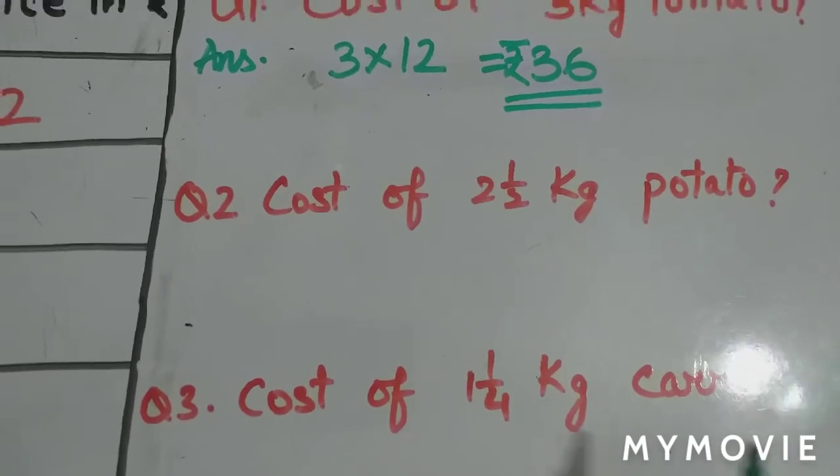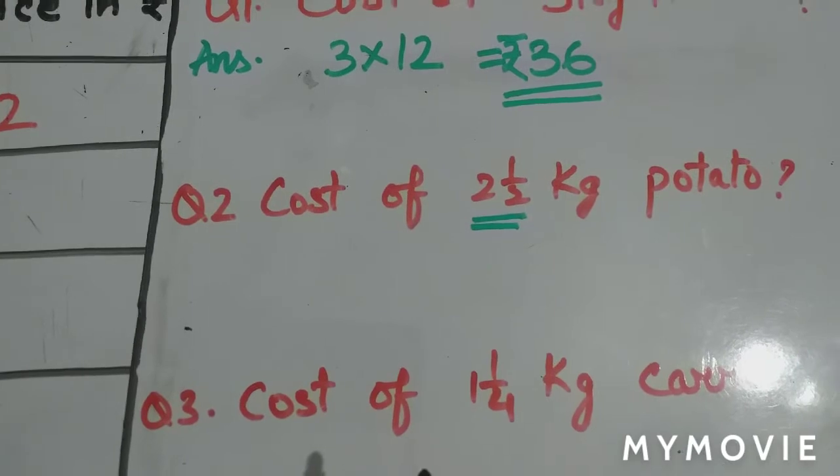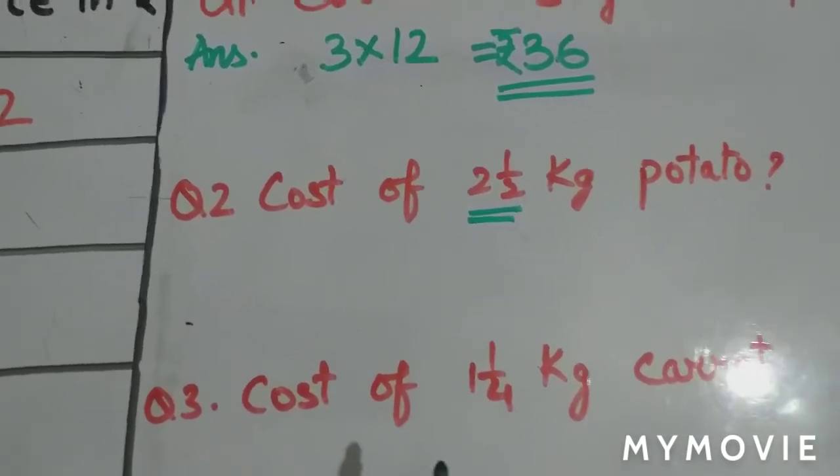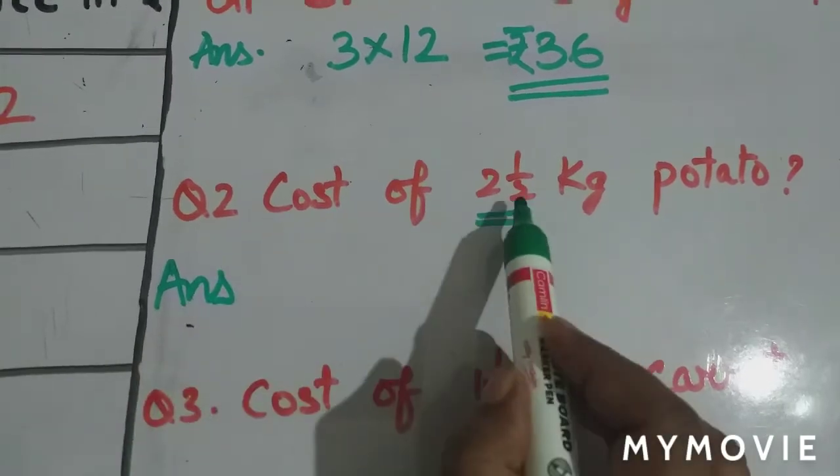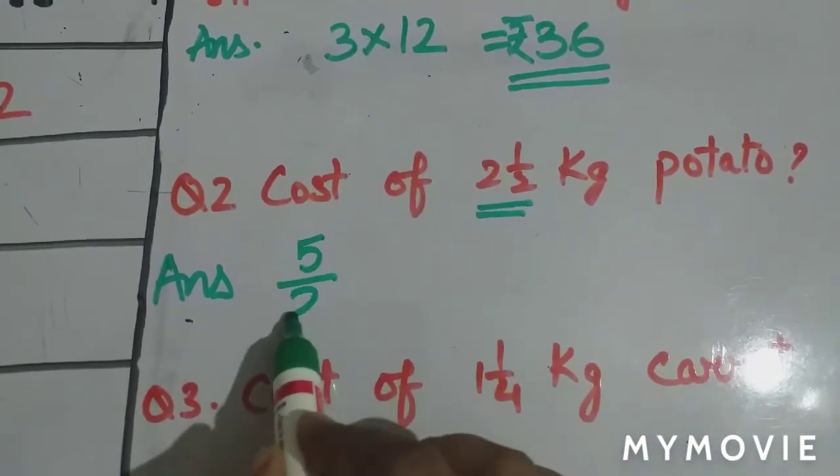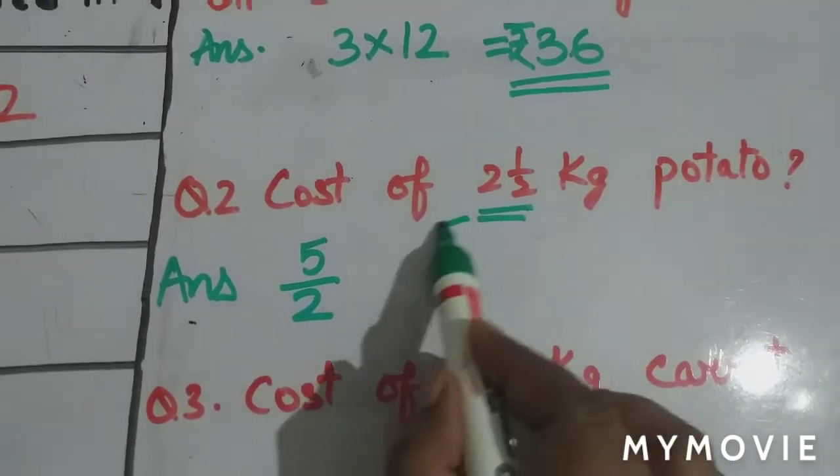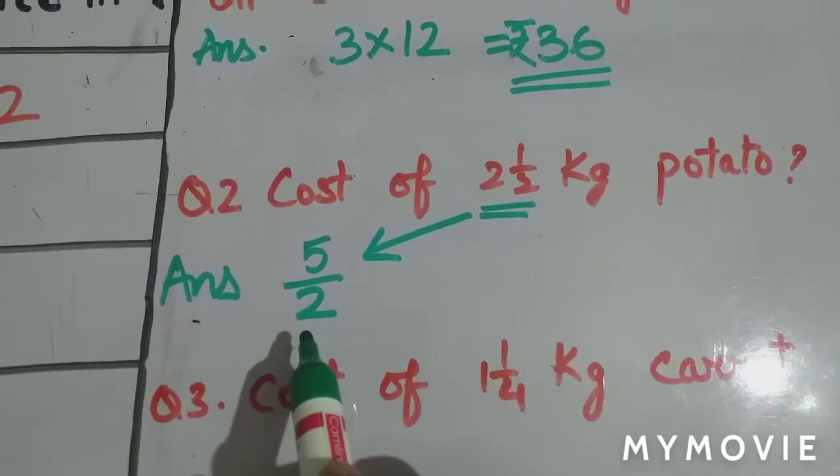Next is cost of 2 and a half kg potato. Now here we have a problem that this is a mixed fraction. First we have to convert it into improper fraction. This will be 2 twos are 4 plus 1, 5 by 2 kgs. We have converted 2 and a half as 5 by 2.